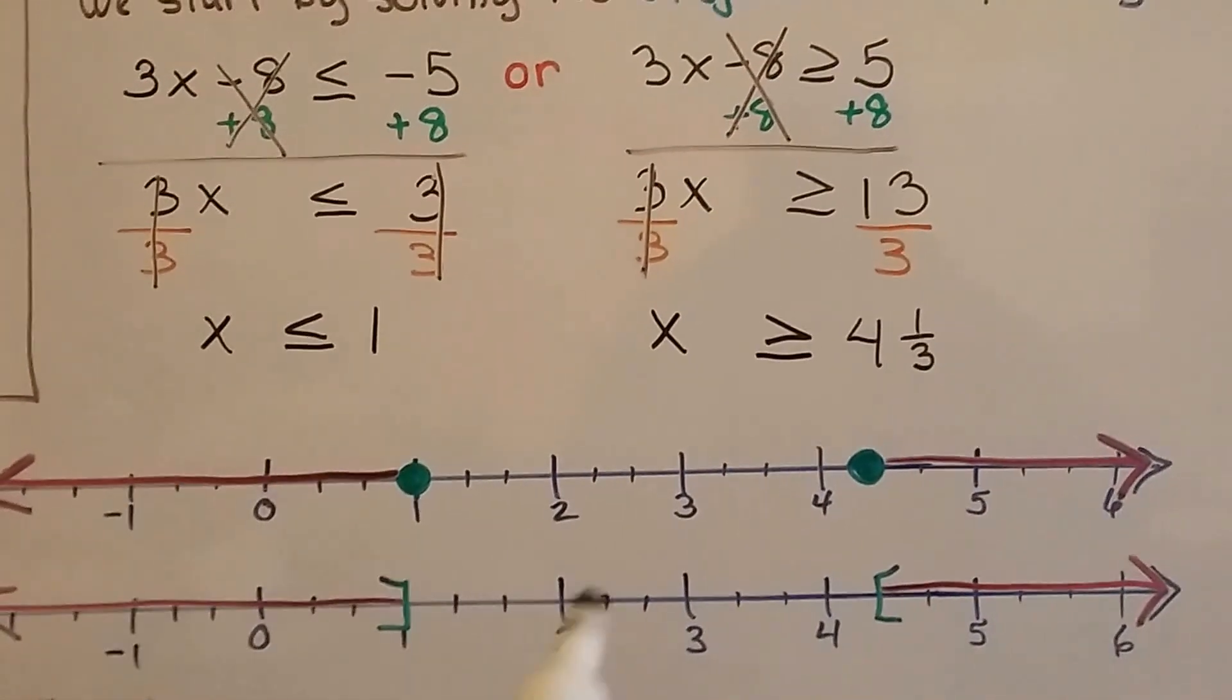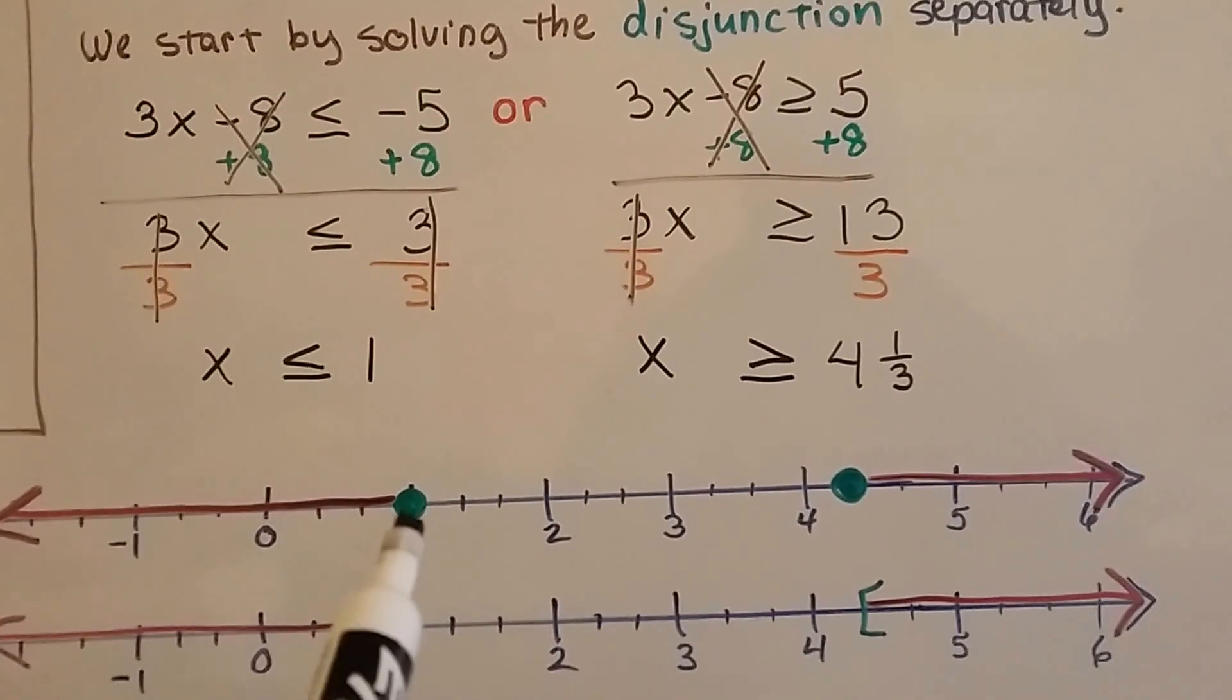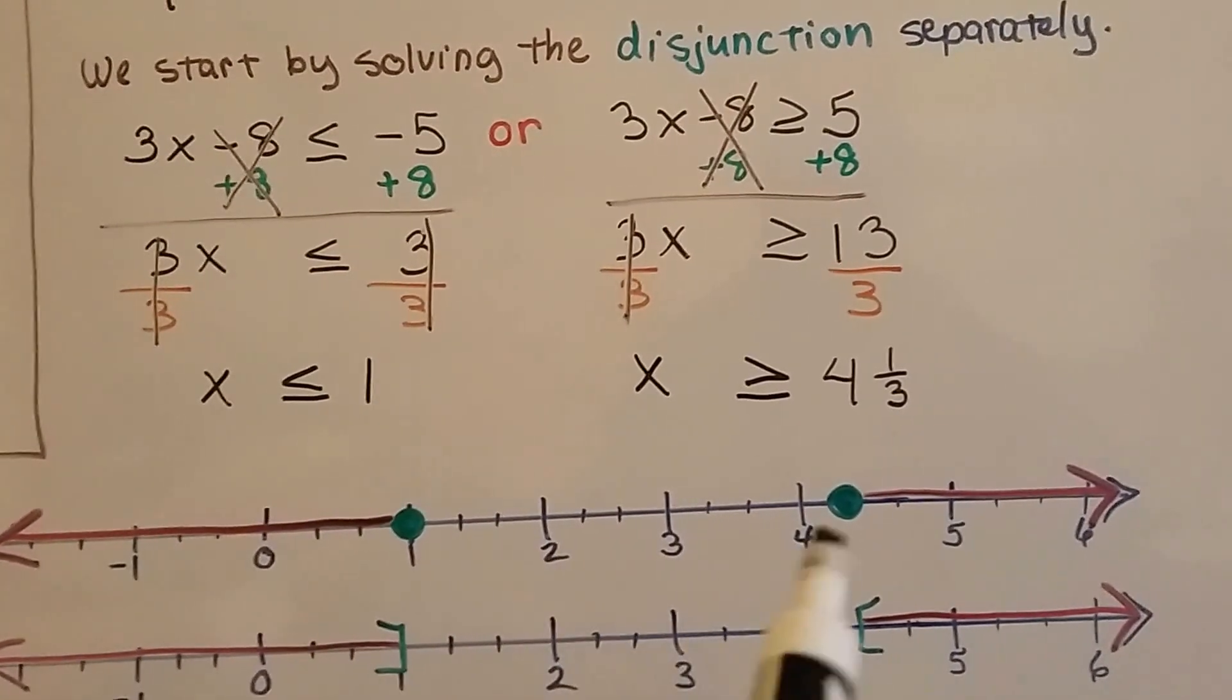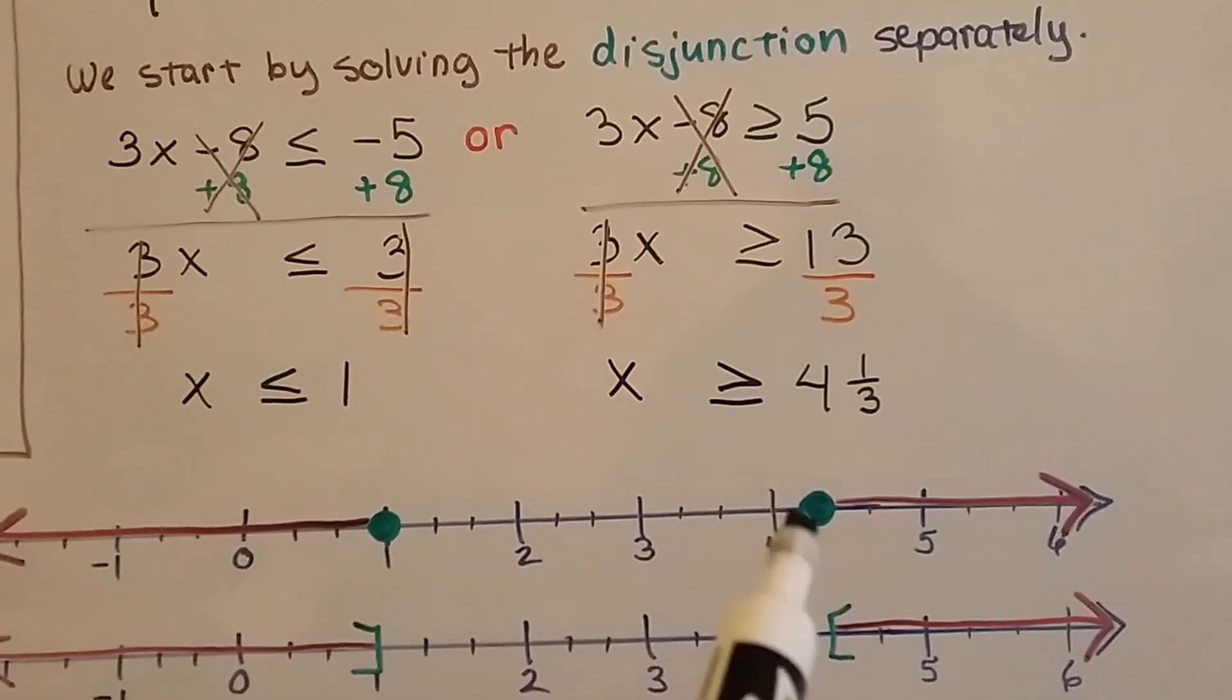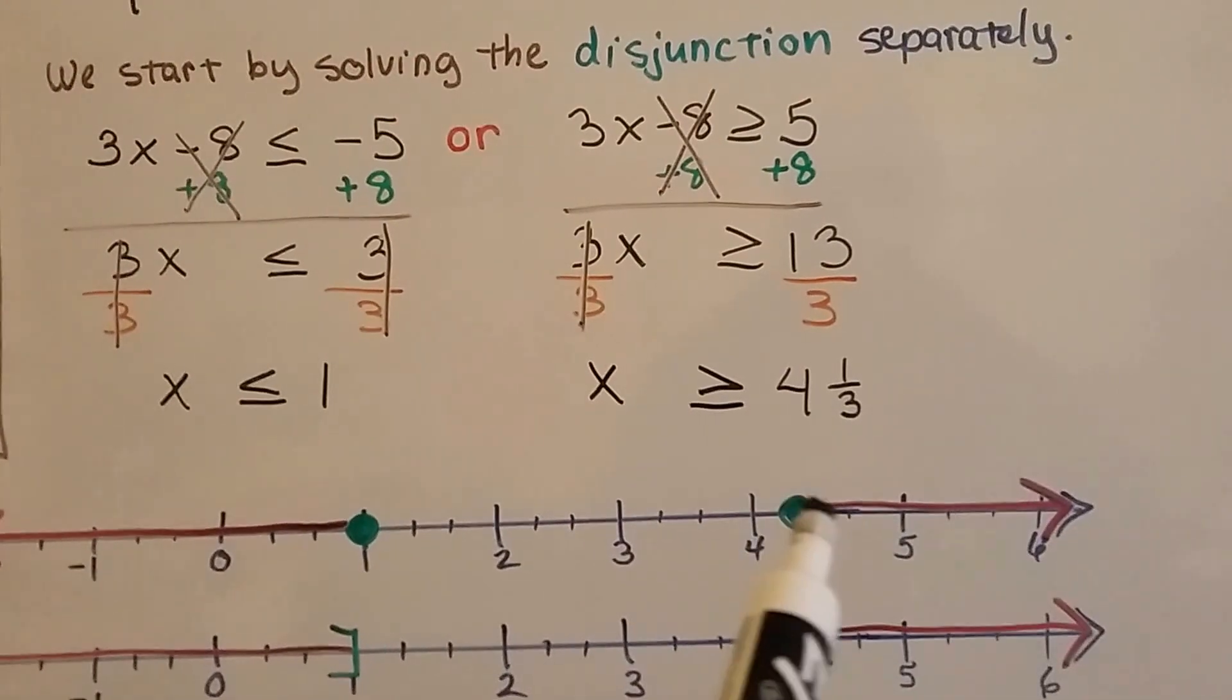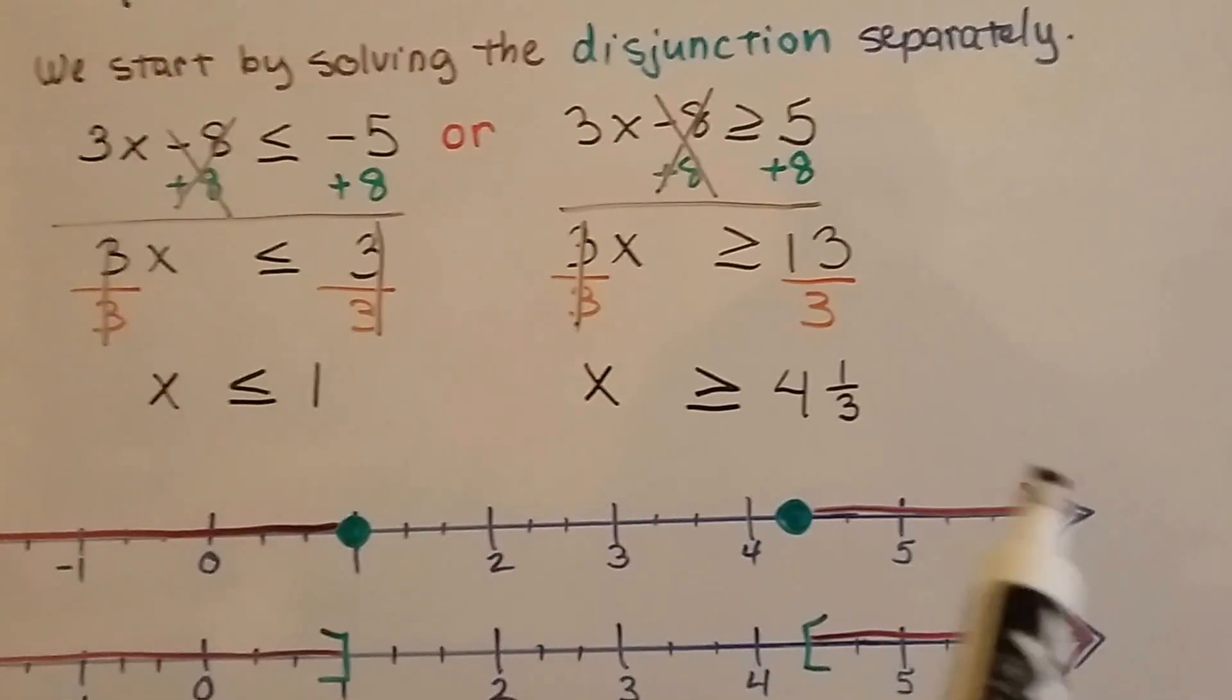So I showed the thirds in my number line. You can see here's 1, 1 and a third, 1 and 2 thirds, 2, 2 and a third. So here's 4 and a third. So because it's greater than or equal to it, I've got a closed dot going on 4 and a third and heading larger.